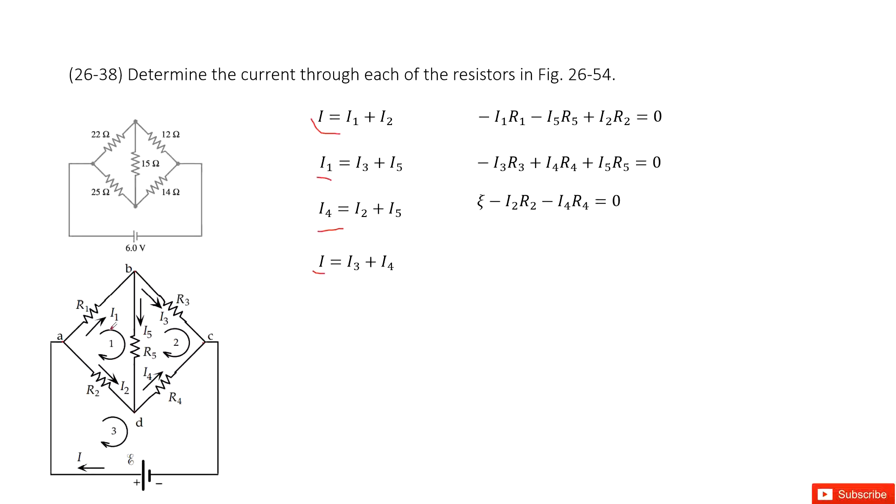we look at the Kirchhoff loop rule for loop 1. So we can see we can draw a loop from R1 to R5 to R2, right? This way. And then we can see from position A, the current goes through resistor R1, so voltage decreases, so minus I1 times R1.